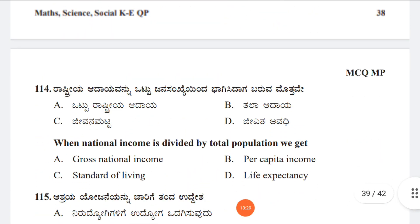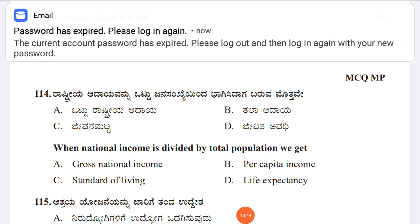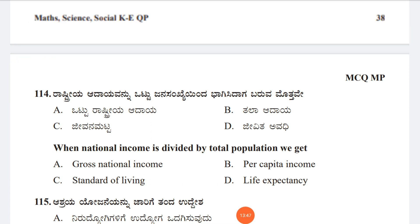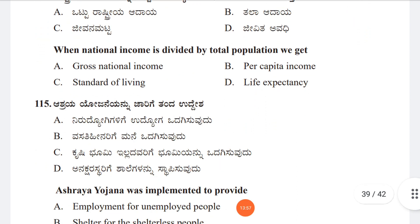Question 114: When national income is divided by total population, what do we get? Option A: Gross National Income, Option B: Per Capita Income, Option C: Standard of Living, Option D: Life Expectancy. Option B, Per Capita Income, is the right answer.